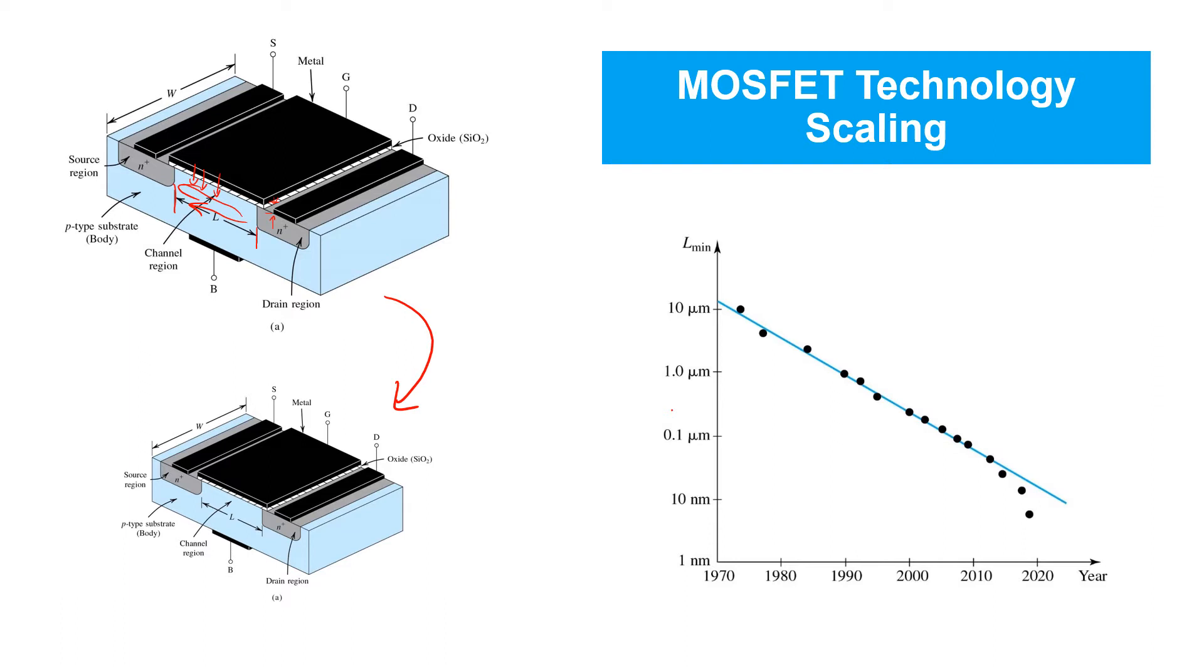Now, as MOSFET transistors became very small, this ran into some limits. First of all, the threshold voltage could no longer be scaled in proportion to the supply voltages involved. And this limit arose because of sub-threshold leakage, which we'll talk about shortly.